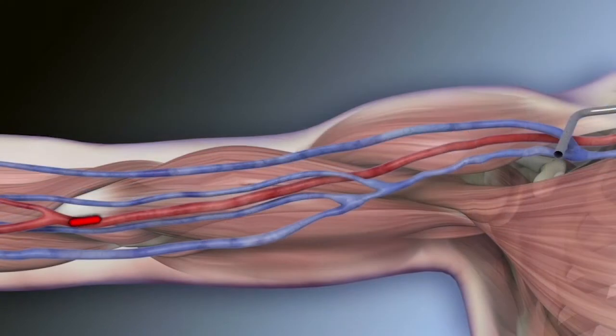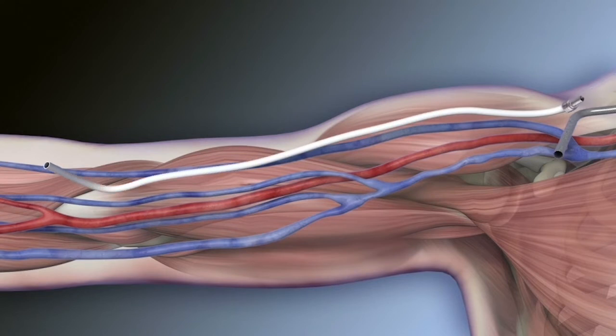Make an incision at the target artery site and expose artery. Tunnel the graft from the DPG incision to the arterial incision site, utilizing the graft markings to avoid twisting the graft.